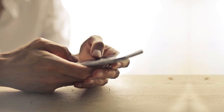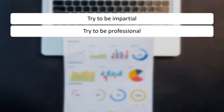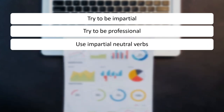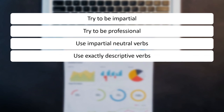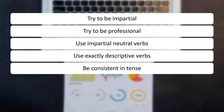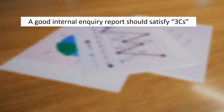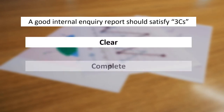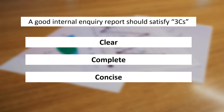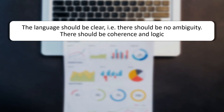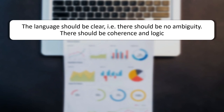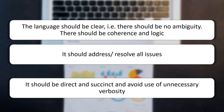If prompt remedial action is not taken, such an incident may jeopardize the reputation and goodwill built over the years. When writing an internal inquiry report, you need to be impartial and professional, use neutral and descriptive verbs, be consistent in tense, avoid unnecessary adjectives and unnecessary information. A good internal inquiry report should satisfy the 3Cs: it should be clear (no ambiguity), coherent (logical), and complete (addressing and resolving all issues).